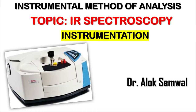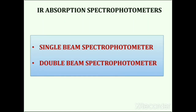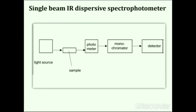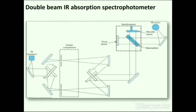Next topic is instrumentation of infrared spectroscopy. Infrared spectrophotometers are of two types: single beam and double beam spectrophotometers. A single beam spectrophotometer uses a single beam of light passing through one solution at a time. In a double beam instrument, a single beam splits into two — one passes through the sample, another through the reference. Modern dispersive IR spectrophotometers are invariably double beam instruments. Radiation starts from the light source, is incident upon the sample, goes to the monochromator, and then to the detector. This is a double beam scanning IR instrument using a diffraction grating in a monochromator to disperse different wavelengths.